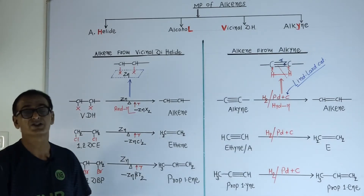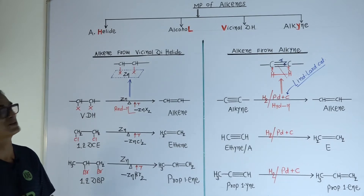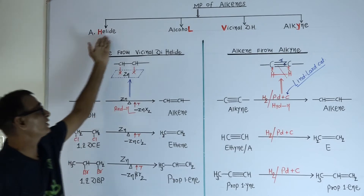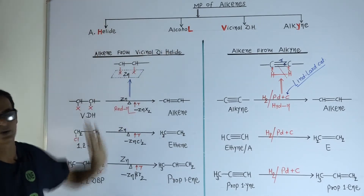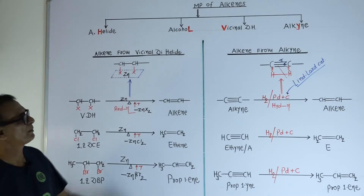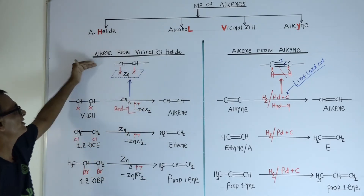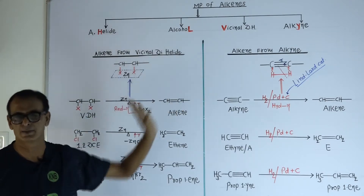Welcome. Today we will cover the remaining two methods of preparation for alkene compounds. The first two methods, from alkylite and alcohol, we already completed. Today we will try to complete alkene from vicinal dihalide and alkene from alkyne compounds.